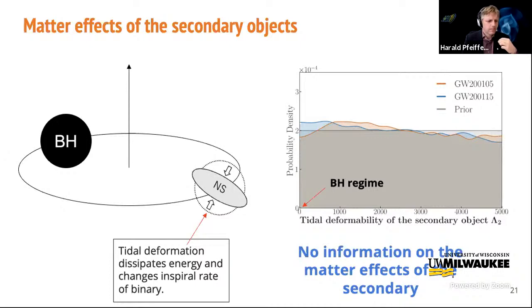A question asks whether we have seen any deviations from General Relativity (GR). We have looked for deviations from GR, but given that the signals are quite weak with fairly low signal-to-noise ratios, we have not found any deviations. The bounds on deviations from GR we can place based on these systems are actually weaker than bounds already established from earlier signals. It's always an exciting question and we always look for deviations, but unfortunately in this particular case we haven't found any.